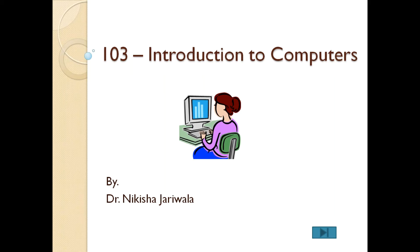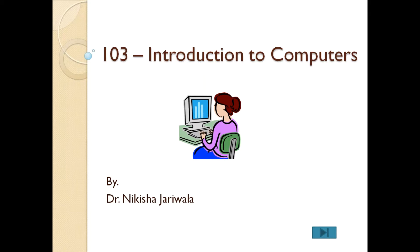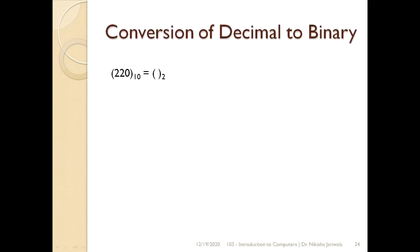All right students, let's start our lecture. Good afternoon everyone. Within last lecture we started with Unit 3, that is number system. Within number system we have seen introduction to various number systems: binary, decimal, octal, and hexadecimal number system. After that we have seen what is ASCII code, what is BCD code, and then we started with topic 3.2, that is conversion from decimal to binary and binary to decimal. We saw few examples of how to convert decimal numbers to binary.